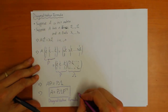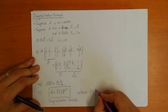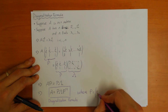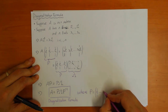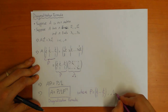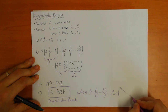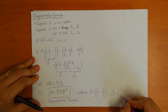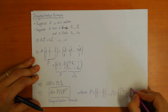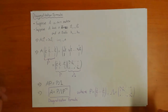So those are the two matrices you need: P is the matrix with the eigenvectors in the columns, and lambda is the matrix with the eigenvalues down the diagonal. Let's do a quick example.